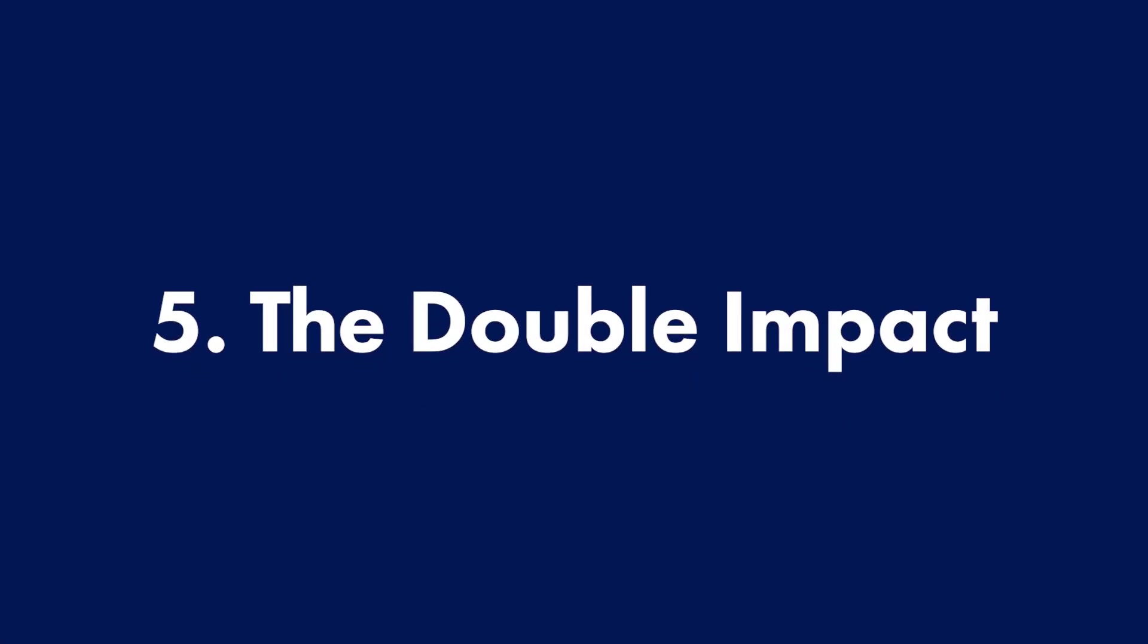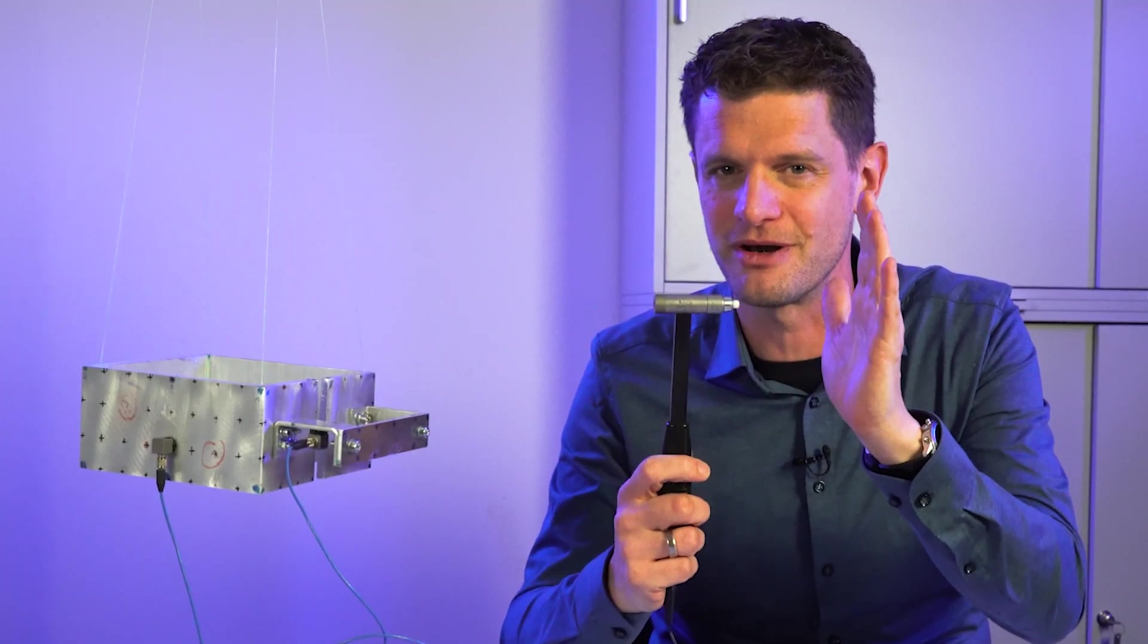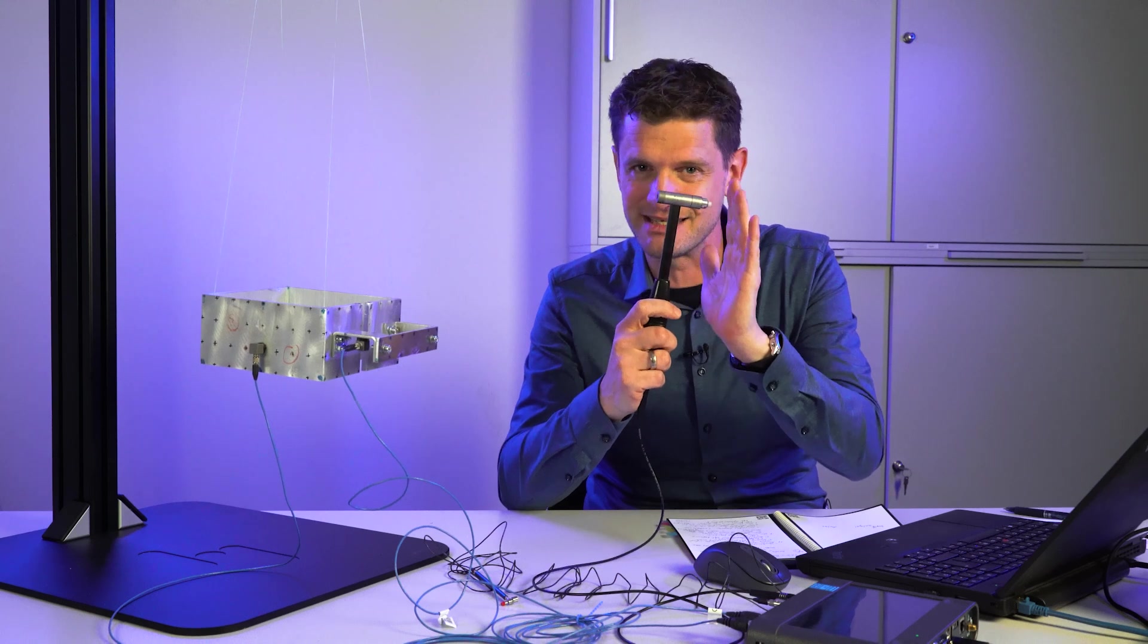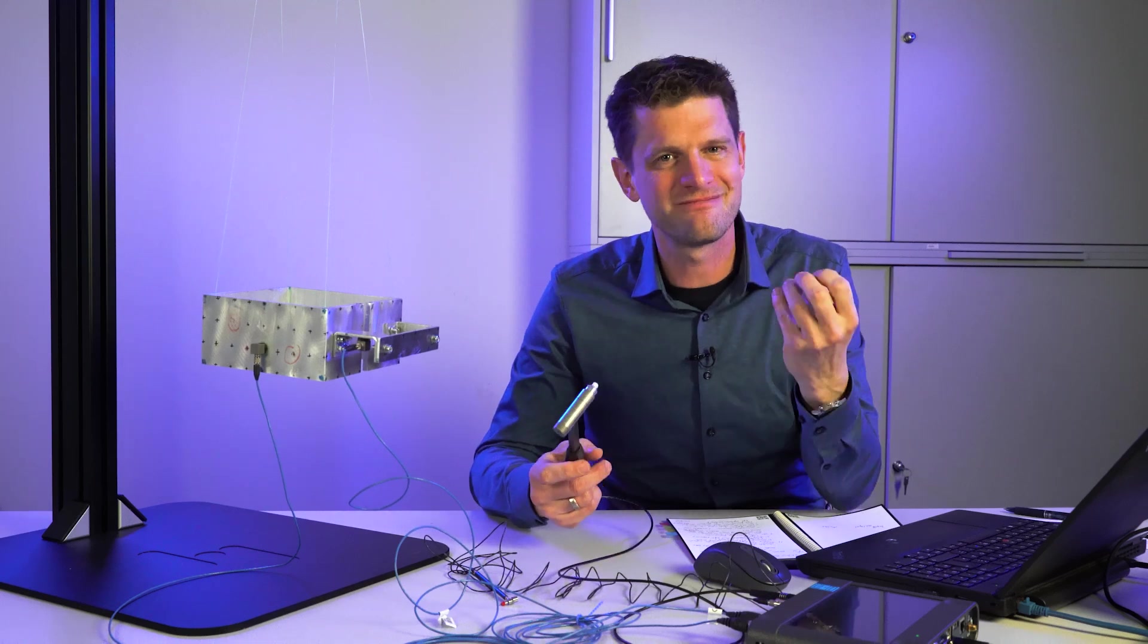On place number five, the double impact. In modal analysis we impact our structure and listen to the answer and we understand the model. But if we hit it twice by accident then we didn't get the right answer. We modify the answer of the structure and we get errors in the signal.